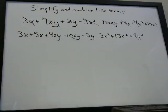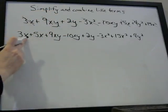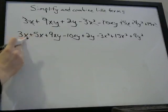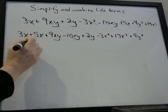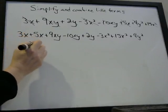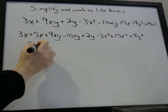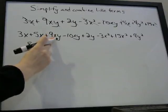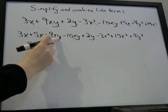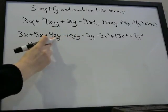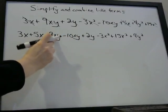So now let's combine like terms. Here we have 3x plus 5x — we can combine these x's: 3 plus 5 is 8x. Plus — here we have 9xy minus 10xy.